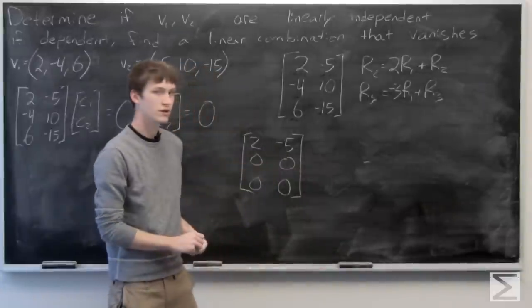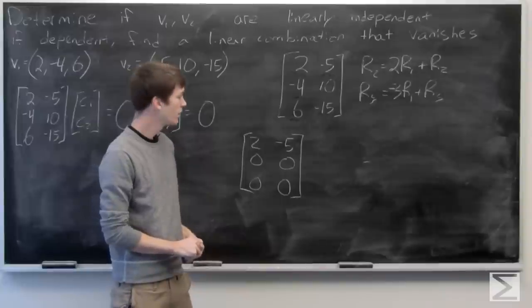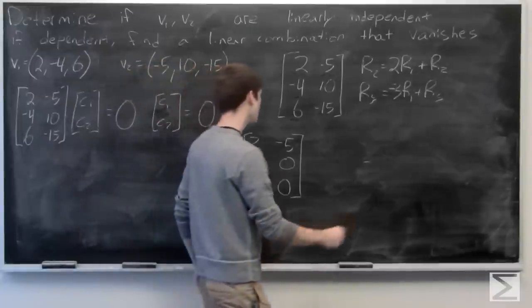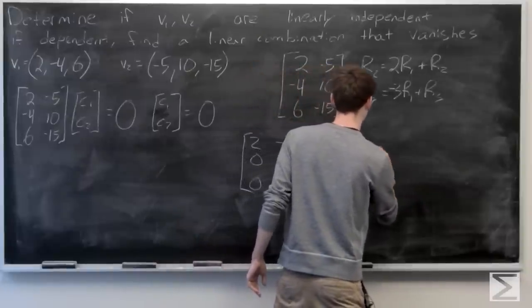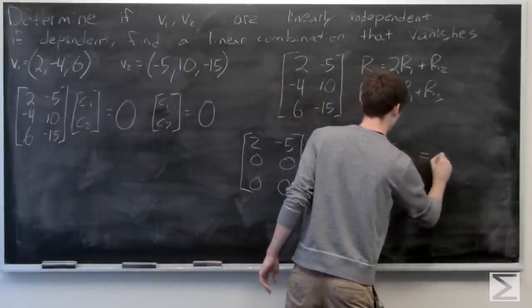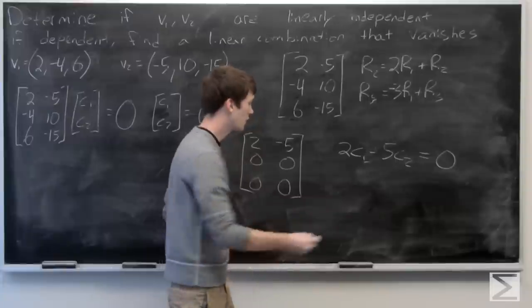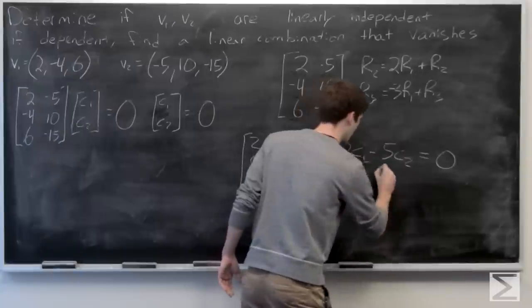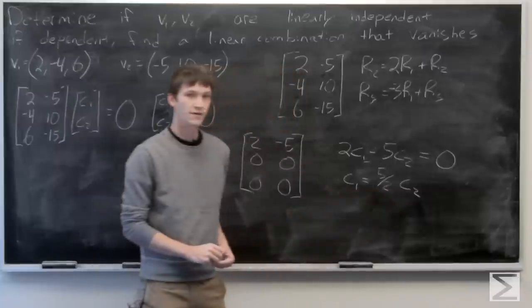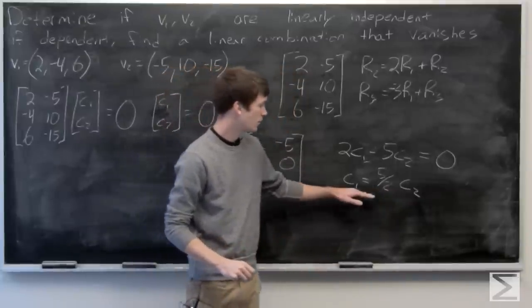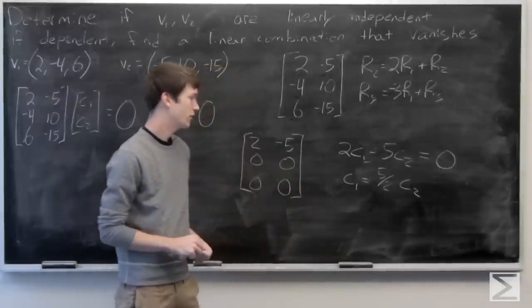So we get that our matrix is simplified down to 2, -5 in the first row, then 0, 0 and 0, 0 for the remaining rows. This tells us that if we let 2*c1 - 5*c2 equal 0, then we have a solution. We can let c1 equal 5/2 times c2. So there are actually an infinite number of solutions, which means our two vectors are not linearly independent.